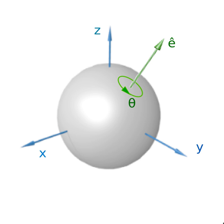A general rotation in four dimensions has only one fixed point, the center of rotation, and no axis of rotation. Instead, the rotation has two mutually orthogonal planes of rotation, each of which is fixed in the sense that points in each plane stay within the planes. The rotation has two angles of rotation, one for each plane of rotation, through which points in the planes rotate.